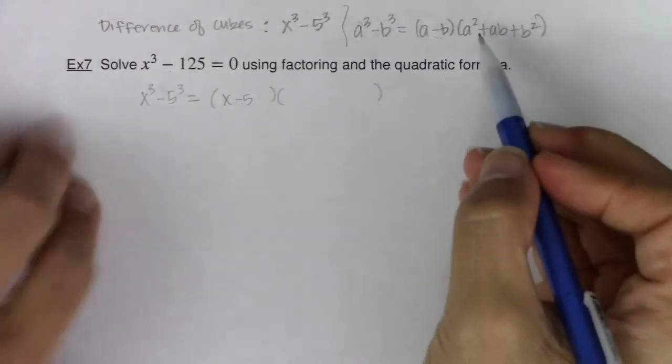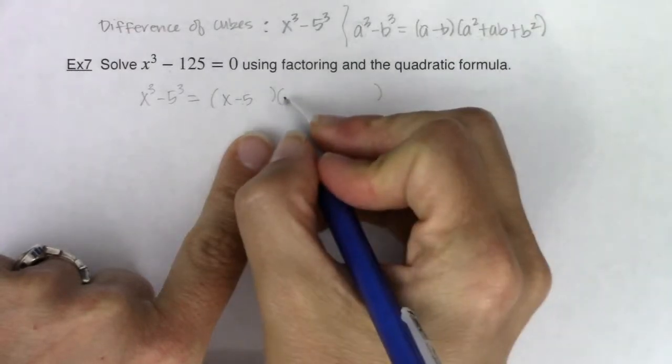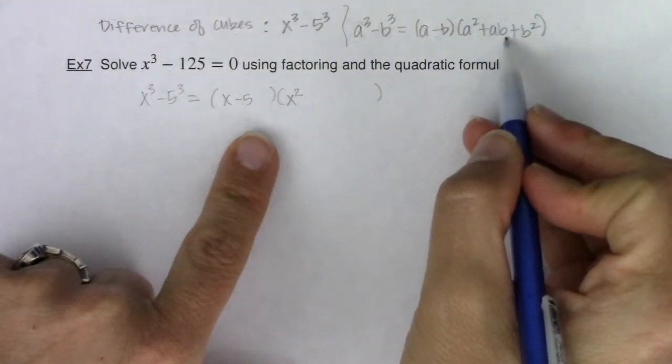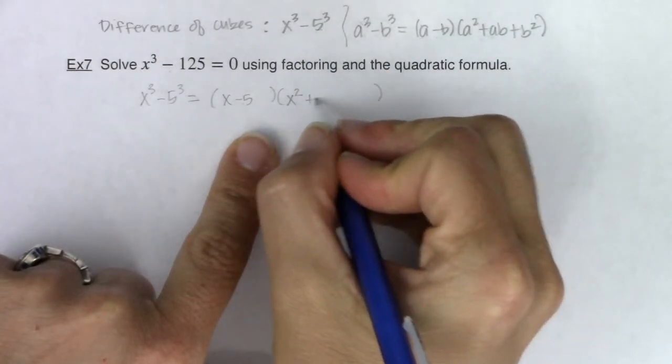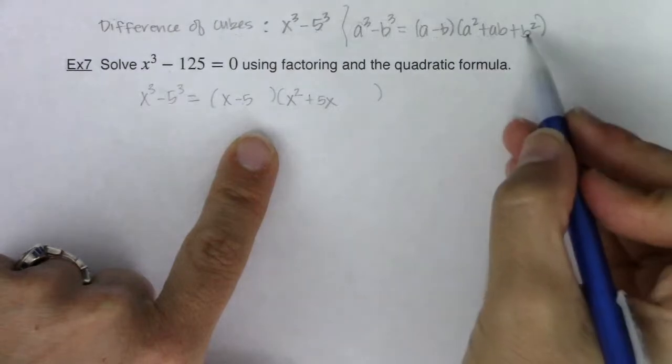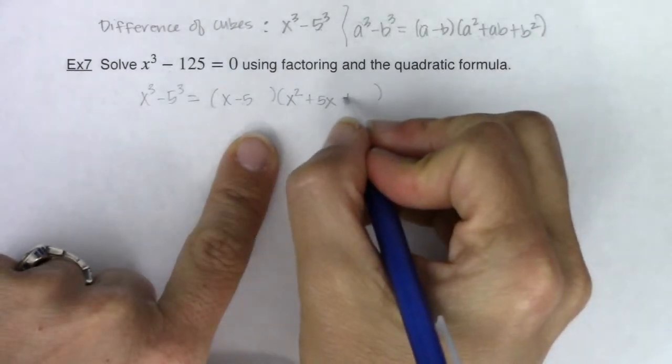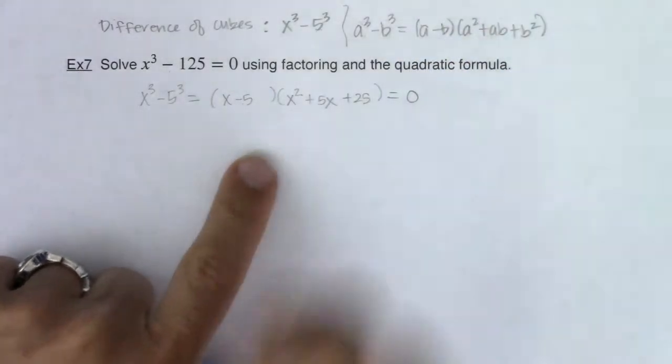Now I'm going to move on to my trinomial. I have a squared. So in this particular instance, it would be x squared. And then I need to take their product, a times b. Well, x times 5 would be 5x. And then I need to do b squared. Well, that would be 5 squared, which would be 25.